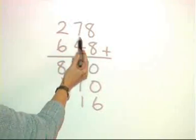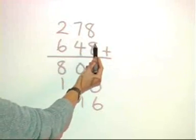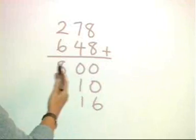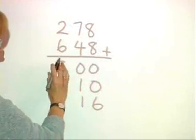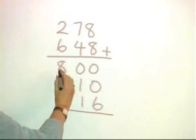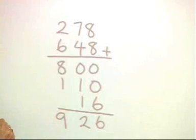Can you see how with the tens, the total gives us hundreds and tens, and with the units, we've got tens and units as an answer? Doesn't make it any harder. We've just got to be careful where we place the numbers. So we can still add them together easily to get 926.